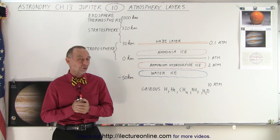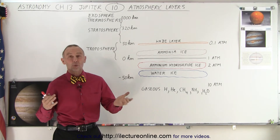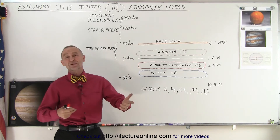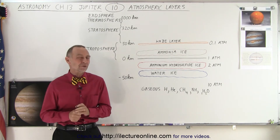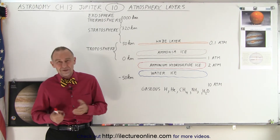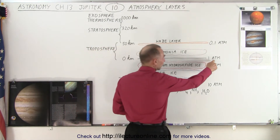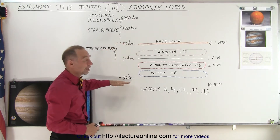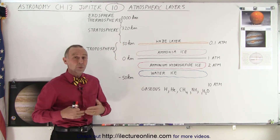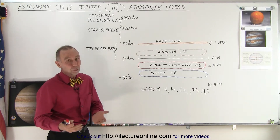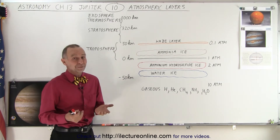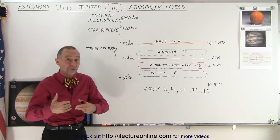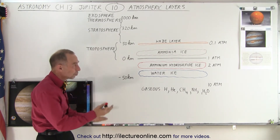There are some very distinct layers on Jupiter, and of course the difficult part is: where is the surface of the planet? Where does the atmosphere end and the planet start? There is no particular point that makes complete sense, so it's somewhat arbitrary. Most astronomers pick the point where atmospheric pressure is one atmosphere as the bottom of the atmosphere and where the planet starts.